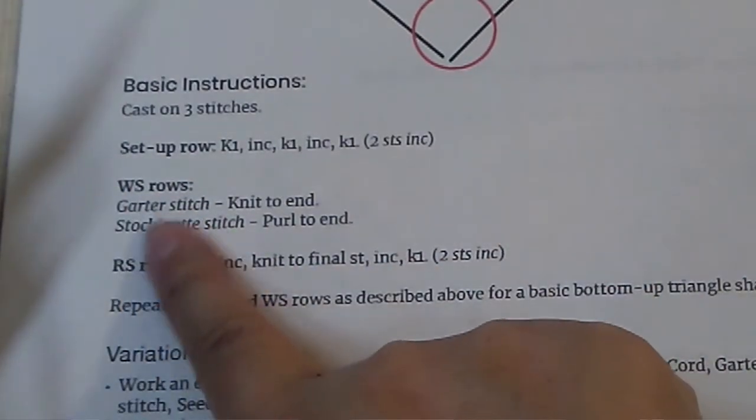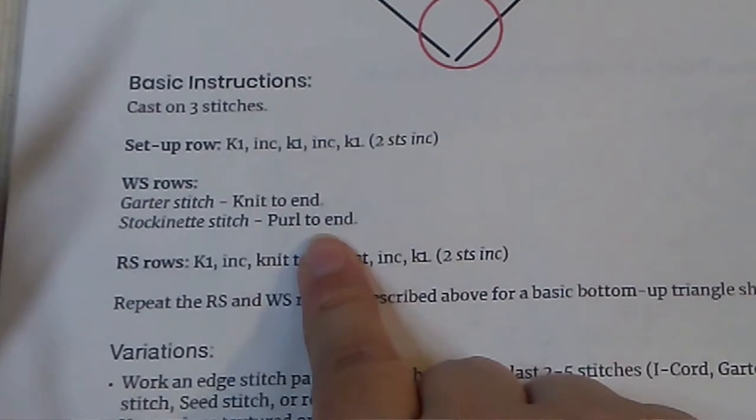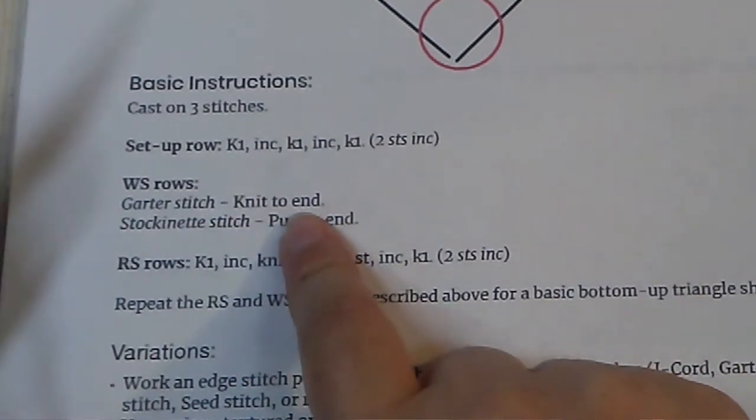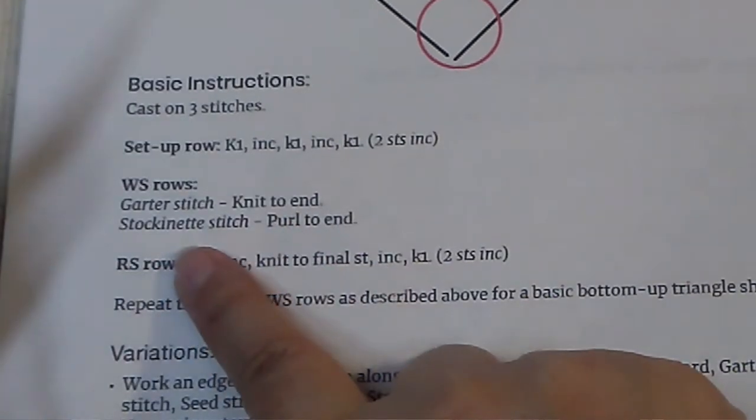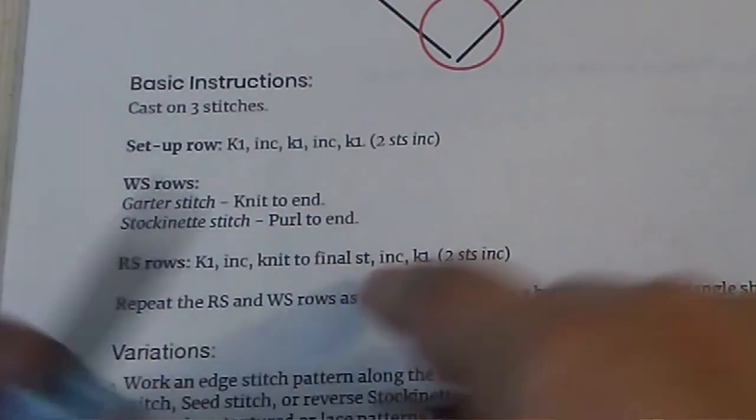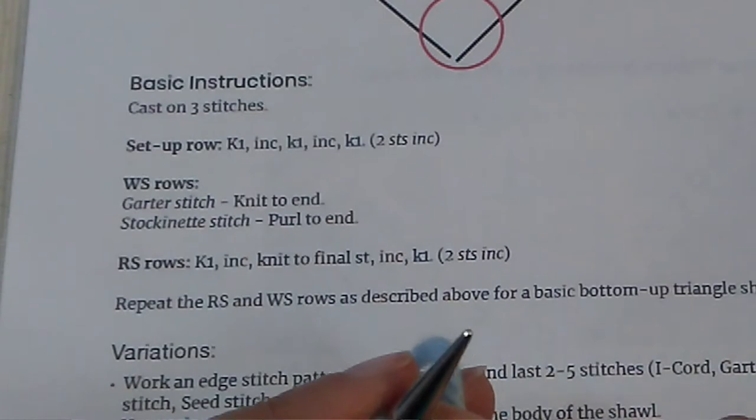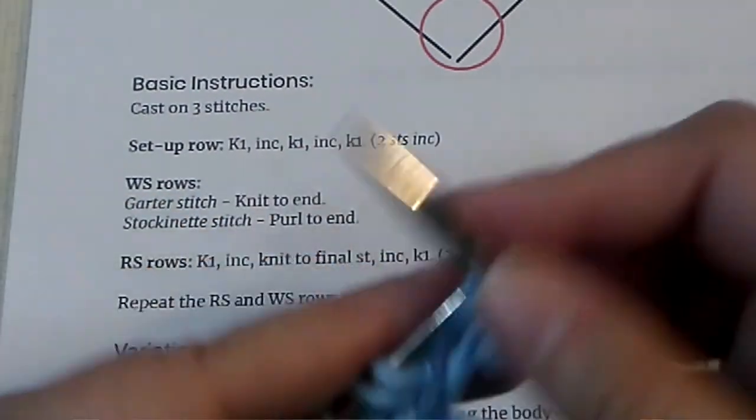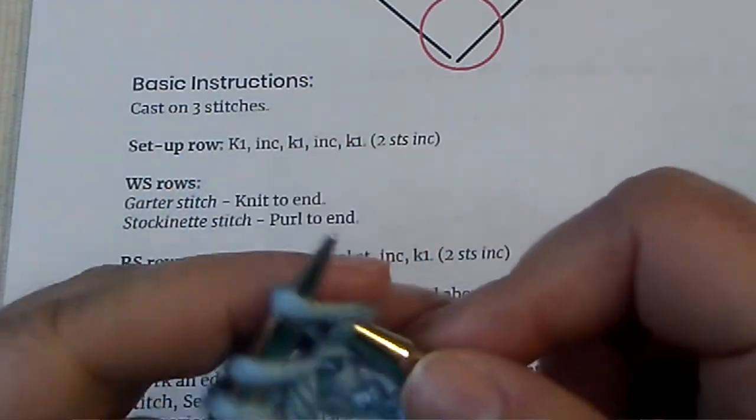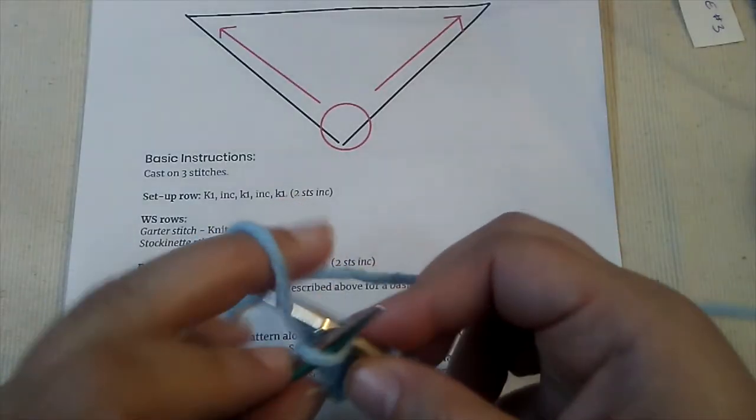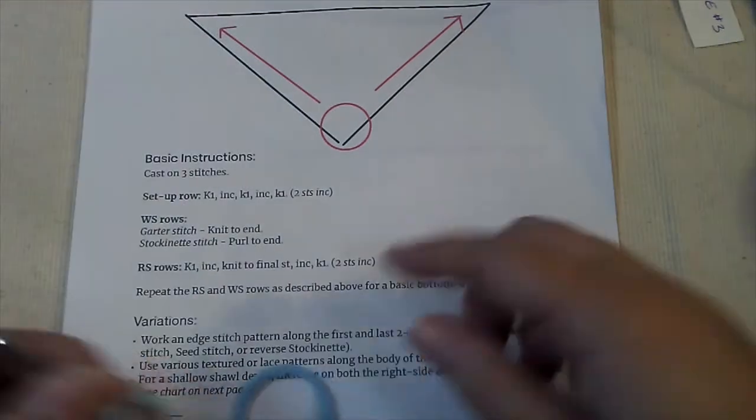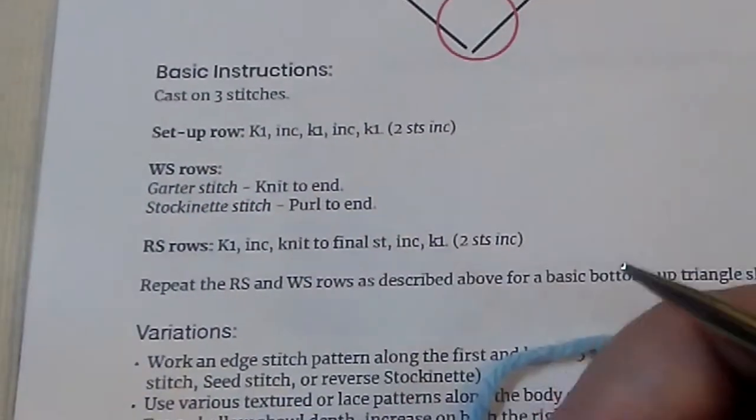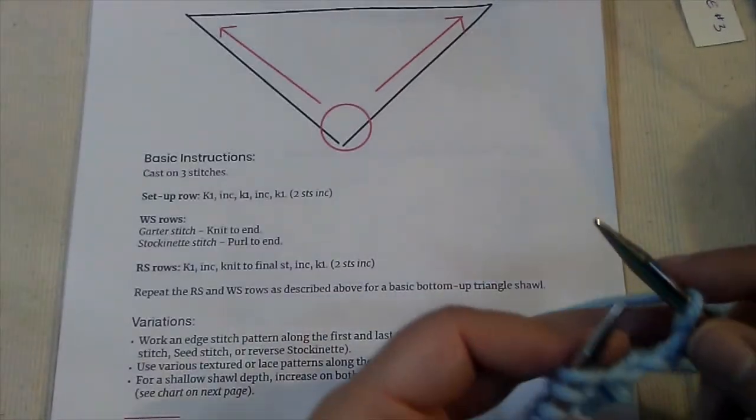Your options for a basic shawl: if you wanted to work it in garter stitch, on the wrong side rows you would knit. If you want it to be in stockinette stitch, you would purl. We'll just do a basic garter construction here, so those yarn overs I'm just going to knit them and leave them open along that edge.